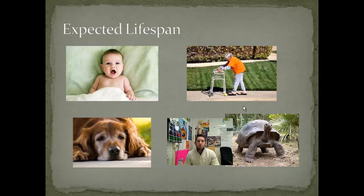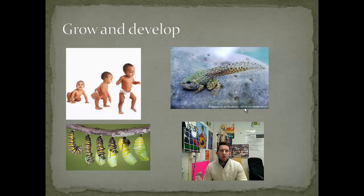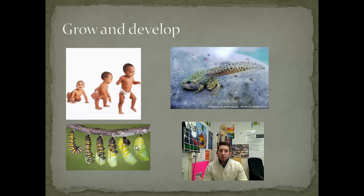All living things grow and develop. There are more dramatic cases of this — a tadpole developing into a frog, or a caterpillar developing through a pupa into a butterfly — but we all go through different stages of development, through puberty, through becoming fertile, all these different stages in life.